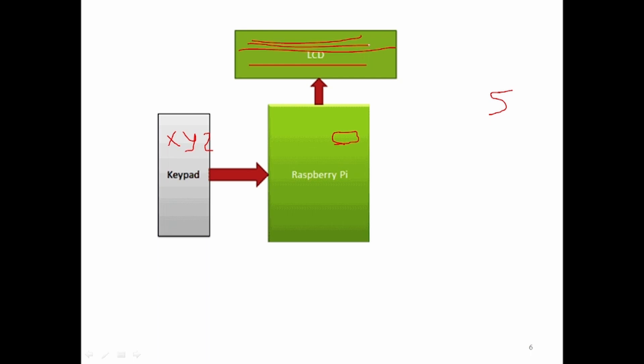We will develop this small project where first the admin will set the password, then the system will ask the new user for the password. A message will appear on the LCD saying 'enter the password.' The new user enters the password; if correct, the system allows the new user to set a new password. If not, it displays 'wrong password' and asks again. So this will be our system.